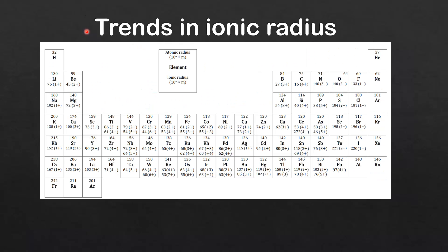Next we look at trends in ionic radius. Starting with group 1, which forms 1+ ions — the ionic radius of lithium is 76×10⁻¹² meters, and as we go down group 1 the ionic radius is increasing. Looking at the trend in ionic radius across period 3, the ionic radius decreases from sodium to phosphorus, but then when we get to sulfur it starts to increase again. That's because sodium, magnesium, aluminium, silicon, and phosphorus form positive ions, while sulfur and chlorine form negative ions.